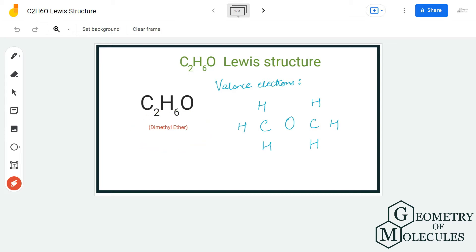To start with this Lewis structure, we are first going to calculate the total number of valence electrons. Here we have two carbon atoms which have four valence electrons each, we have six hydrogen atoms and each hydrogen atom has one valence electron, and we have six more valence electrons from the oxygen atom. So in total we have six plus six plus eight, that is twenty valence electrons.